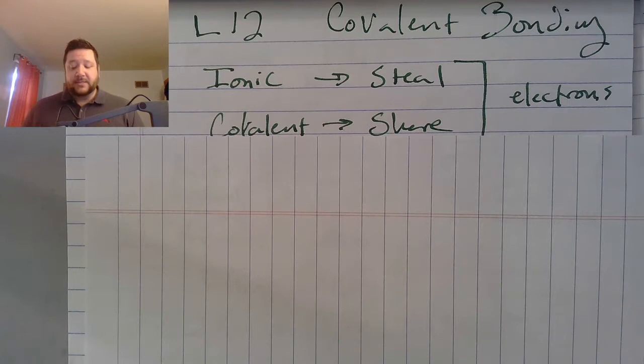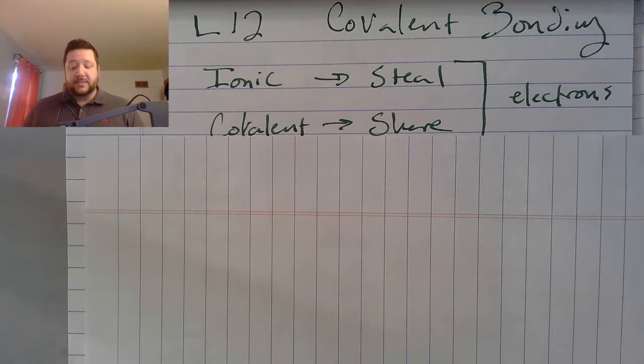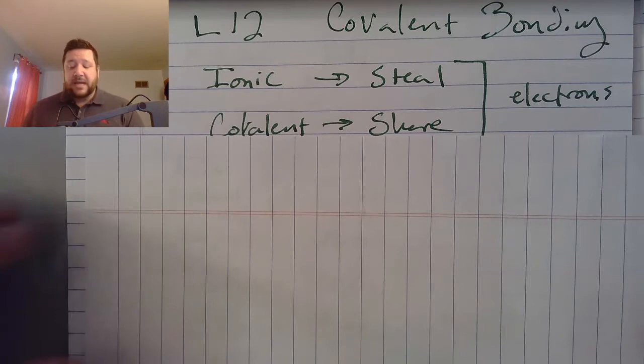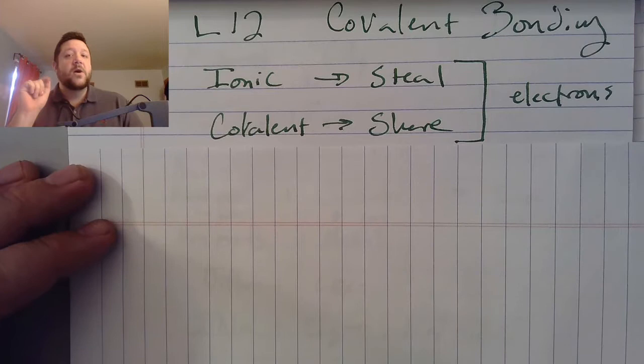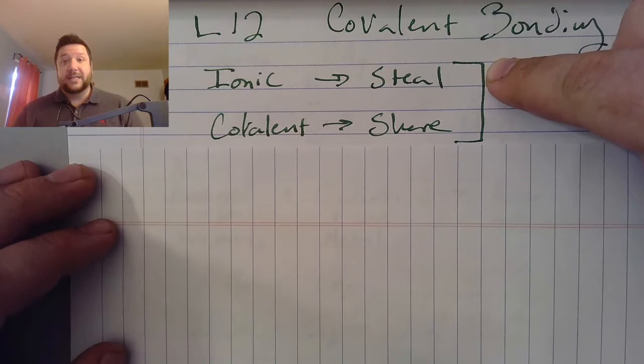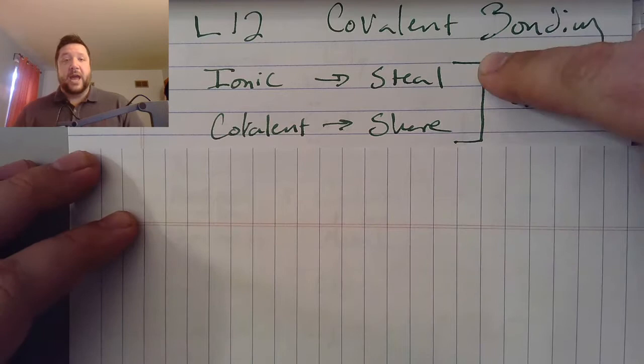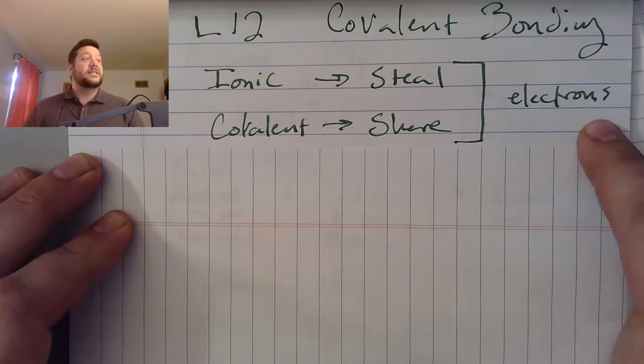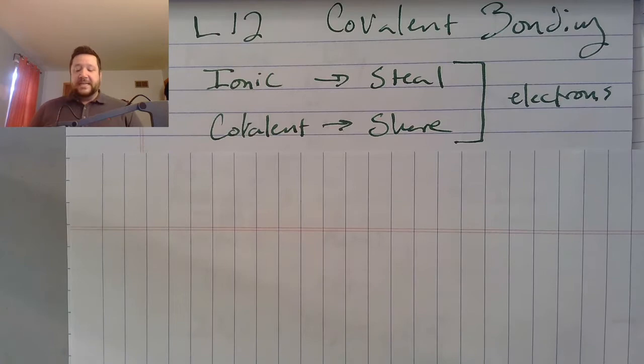In lesson 12 we are looking at covalent bonds. Lesson 11 was ionic bonds. If you remember one thing and one thing only from this lesson, I want you to remember that in ionic bonds they're stealing, and in covalent bonds electrons are sharing. So in ionic bonds we steal; in covalent we share. And what is it that we steal and share? We steal and share electrons. Make sure everything on my page is written in your notes.